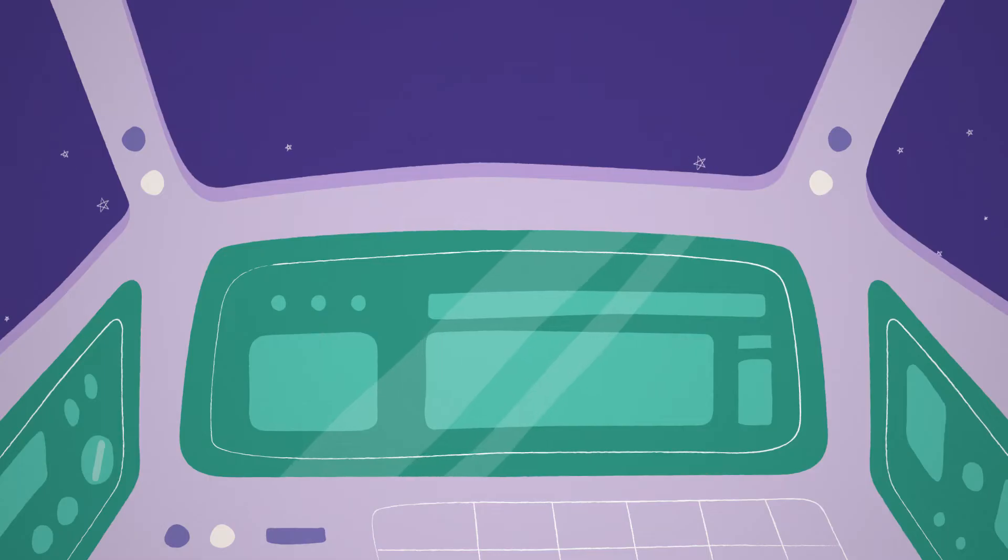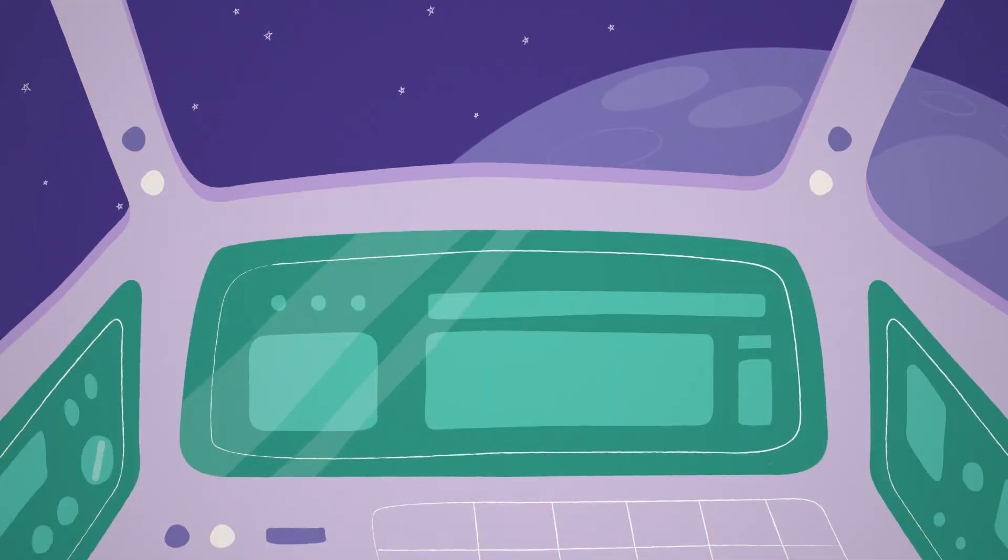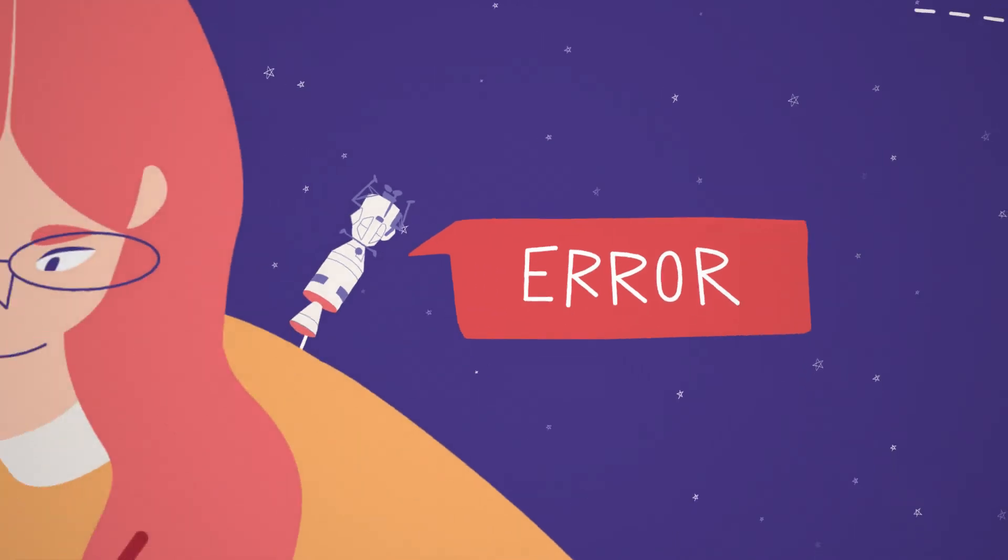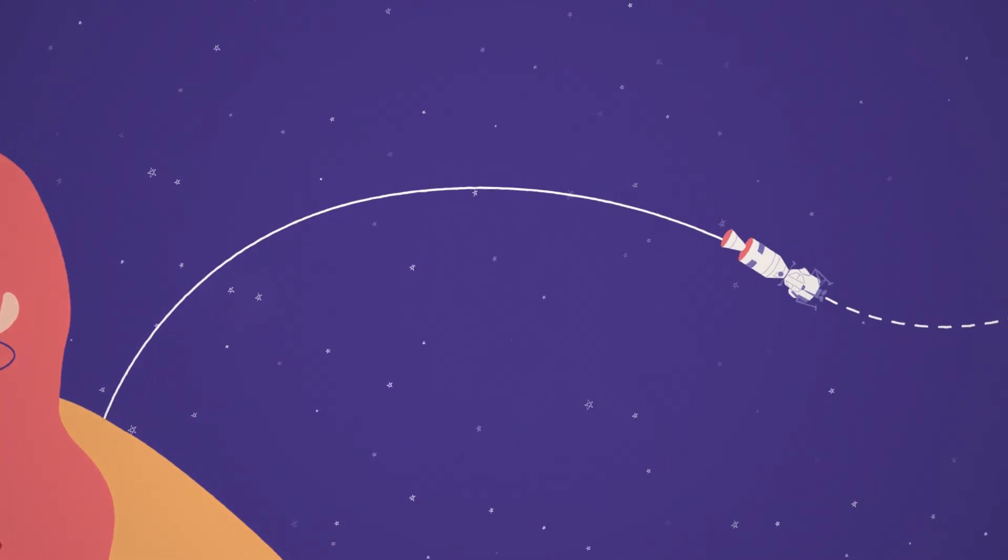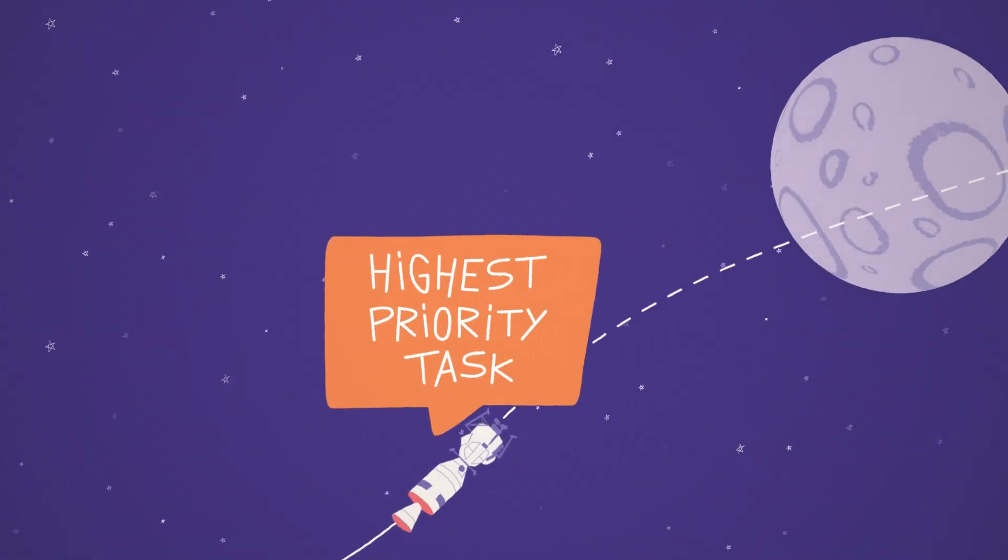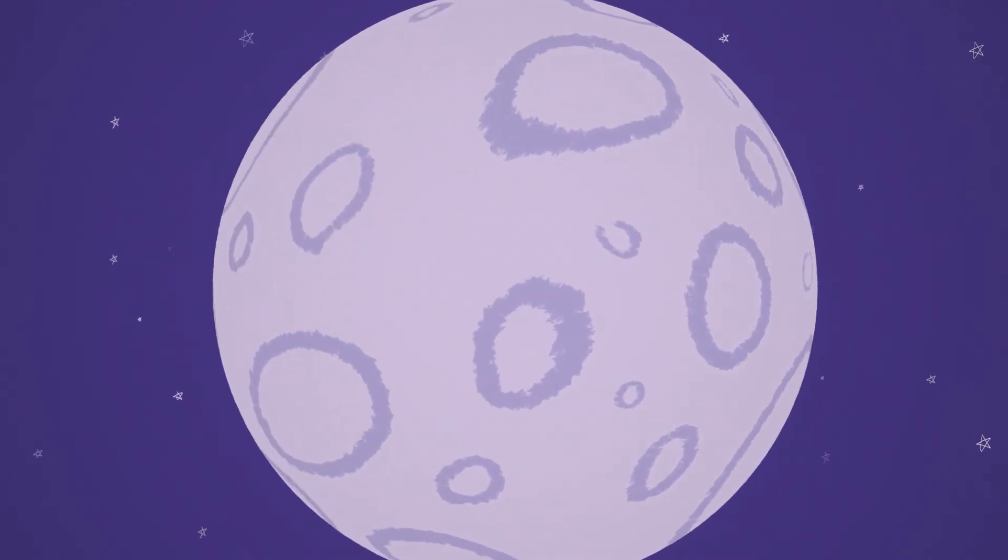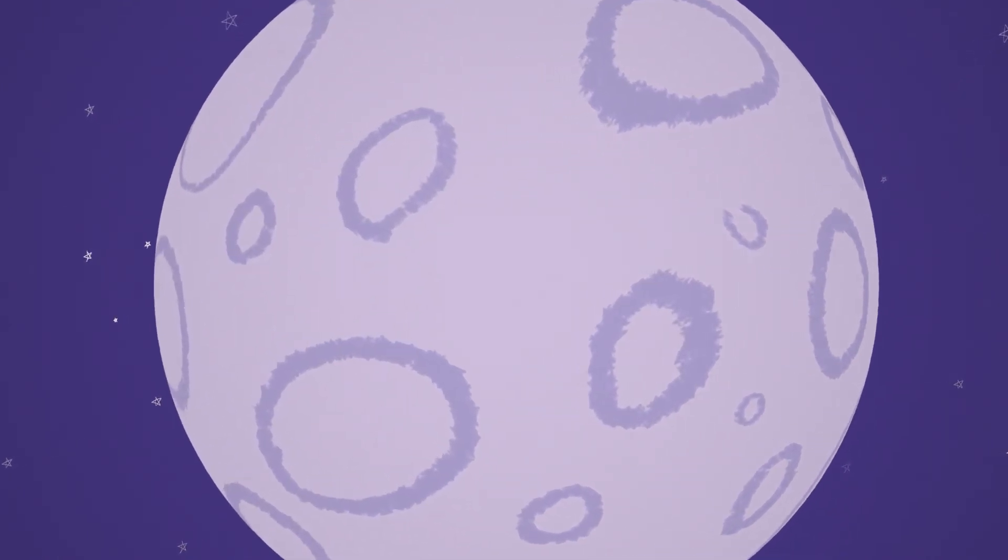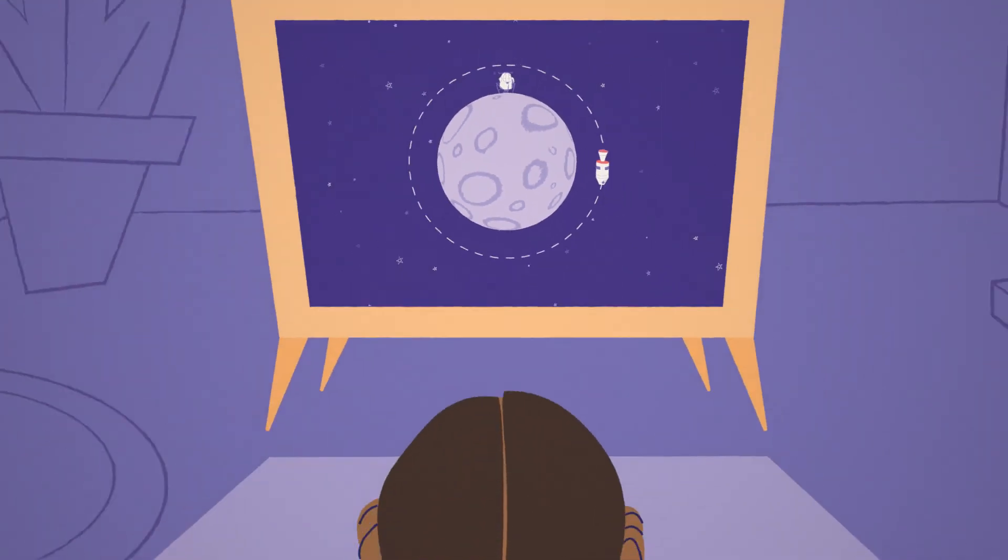Minutes before Apollo 11 reached the moon, the computer started spitting out error messages. Luckily, Margaret had anticipated this problem. Her code told the computer to focus on the highest priority task, landing on the moon. So instead of aborting, Apollo 11 landed safely. All because of Margaret.